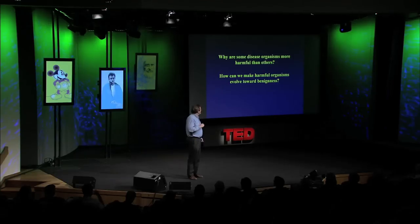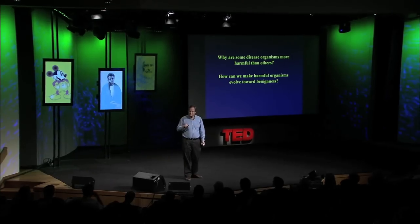Applying this idea to diarrheal diseases: diarrheal disease organisms get transmitted in basically three ways. They can be transmitted from person-to-person contact, from person-to-food-to-person contact, or they can be transmitted through the water. When they're transmitted through the water, unlike the first two modes, these pathogens don't rely on a healthy host for transmission. A person can be sick in bed and still infect tens, even hundreds of other individuals.